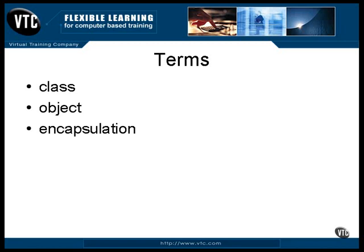Encapsulation refers to the fact that a single object contains data and the methods that work on that data. The encapsulation can be closed for some things — some private things that the outside world has no business diddling with — while other things are exposed. This is not only a clean and easy-to-understand arrangement, but it makes future changes easier because you know exactly what you can change without affecting the outside world.